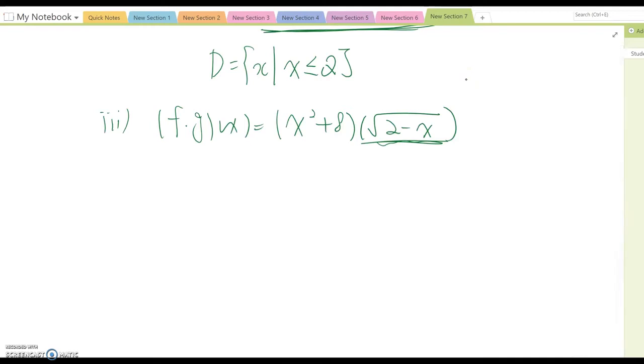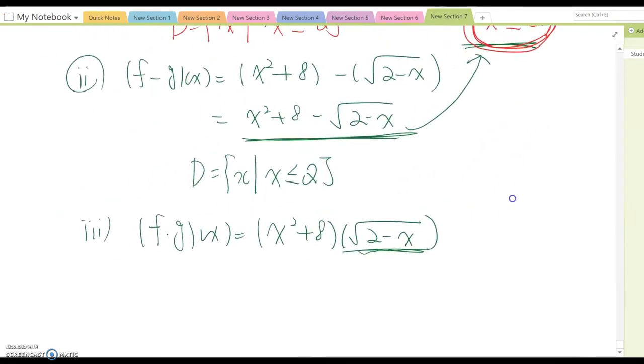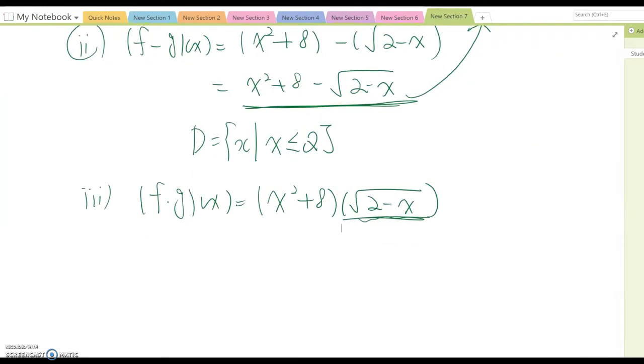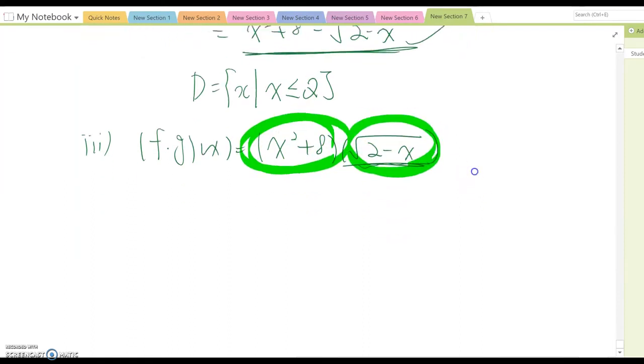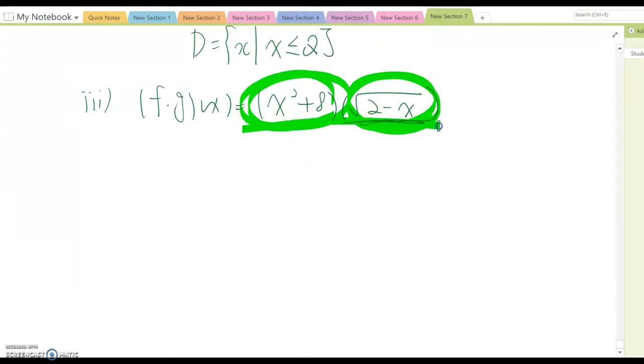Okay, and now from here, we can analyze domain value from here, but like before, this one has all real numbers, but this one case, x must be less than or equal to 2, so same way, this one also follows this one's domain value. So, therefore, domain value from here, x, x is less than or equal to 2 as well.